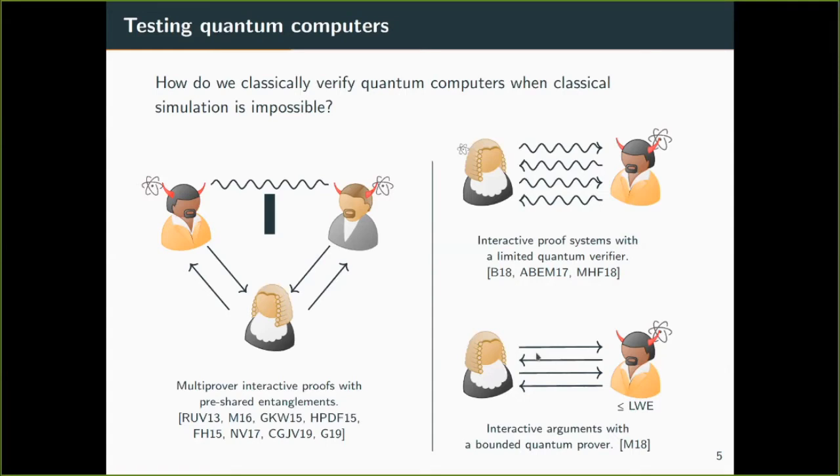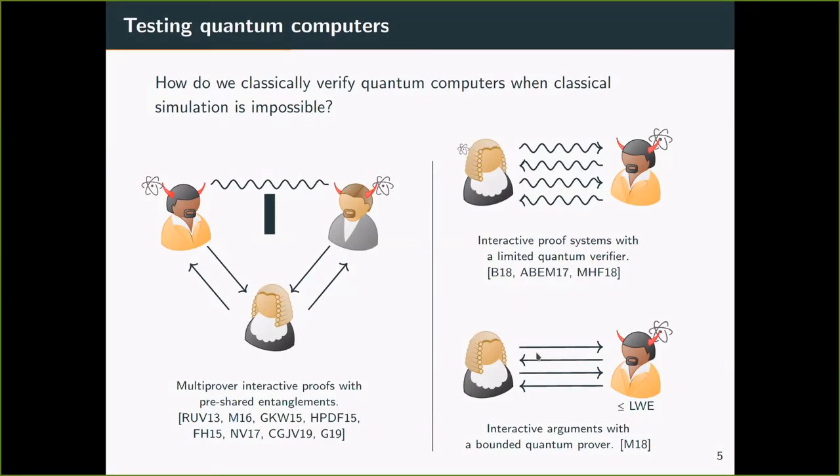In the context of delegation of quantum computation, the question to ask is, how we verify quantum computation when classical simulation is not possible? There are a few different approaches. One is to have the verifier interrogate multiple provers who are not allowed to communicate with each other, but they can share entanglement before verification starts.